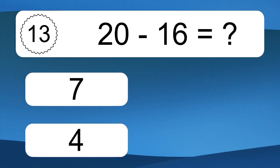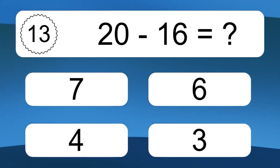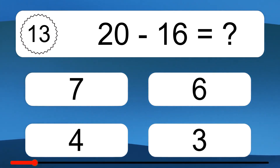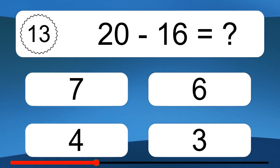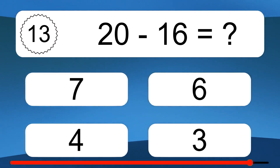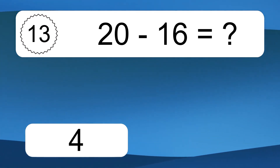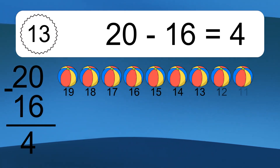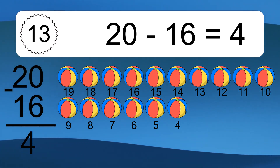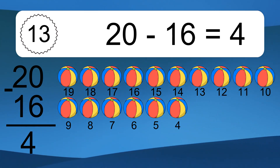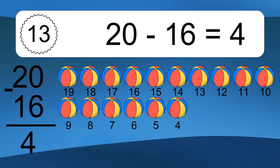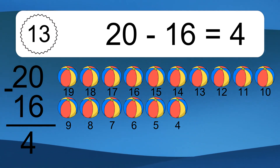20 minus 16 equals what? 20 minus 16 equals 4. Let's count it: 19, 18, 17, 16, 15, 14, 13, 12, 11, 10, 9, 8.